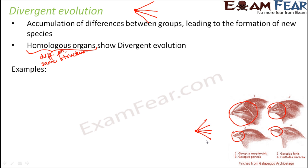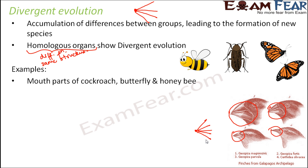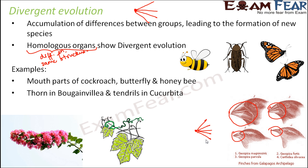Darwin's finches is one classic example of divergent evolution. Besides that, you also have examples like the mouthparts of cockroach, butterfly, and honeybee. Even though structurally the mouthparts might look the same, looking at the food habits: the cockroach eats small bits of leftover food, whereas the honeybee sucks nectar from flowers. Their food habits are different, and therefore the function their mouthparts perform is different, but structurally they are the same. These are examples of homologous organs.